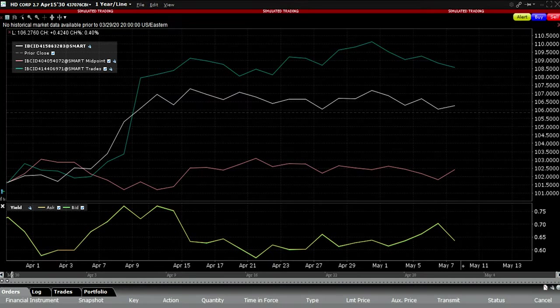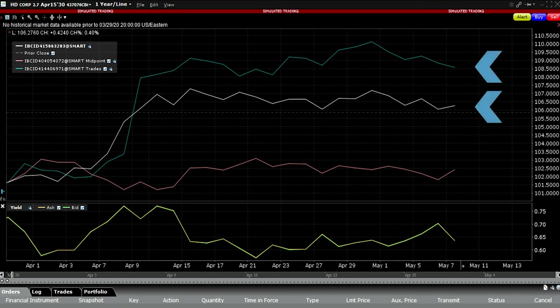From this chart, we can easily see not only the relationship between the corporate bond prices and those of the government note, but also how Lowe's 10-year note has performed with respect to Home Depot's.